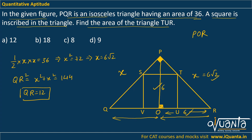Since PO = OR = 6, the angle at R is 45°, and similarly the other base angle is 45°. Since angle U is 90°, we can conclude that UR = TU. And since STUV is a square, VU = TU as well.